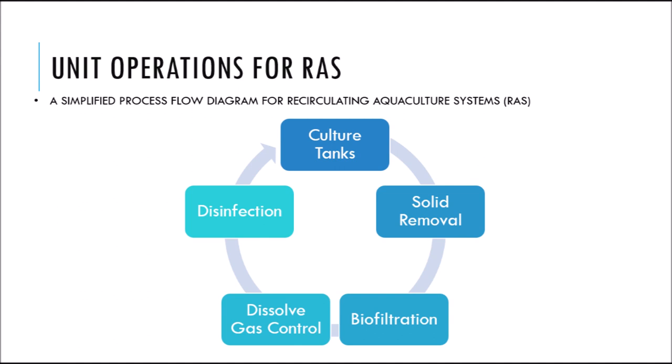This is a simplified flow diagram, meaning that in some cases the process flow could be much more complicated than these five operations. Let's start off with the culture tanks — tanks in which you are farming your target species. After that, you have a solid remover, which removes all the feces and uneaten feed, followed by biofiltration, which converts all the harmful ammonia into a less toxic form.